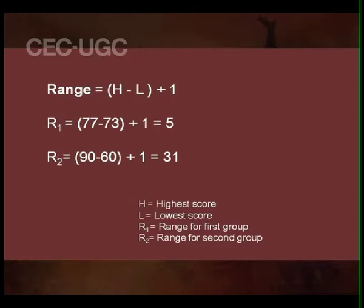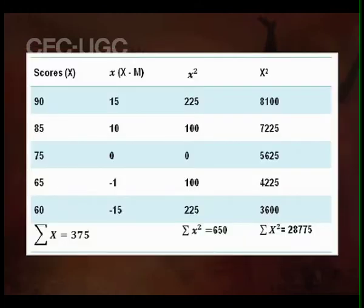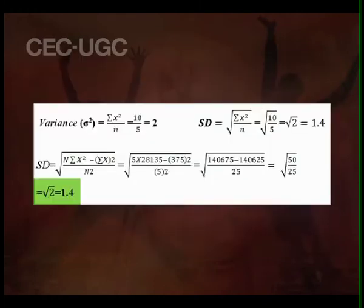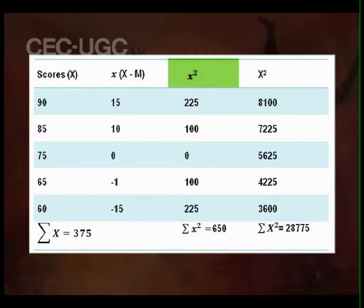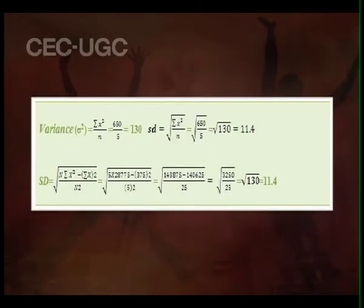As discussed, we have one group from 73 to 77 and another from 60 to 90. The same formula can be applied to the 60 to 90 group. The table shows scores from 90 to 60, with deviation scores in the second column, squared deviation scores in the third, and squared raw scores in the fourth. For this group, the standard deviation is 11.4.